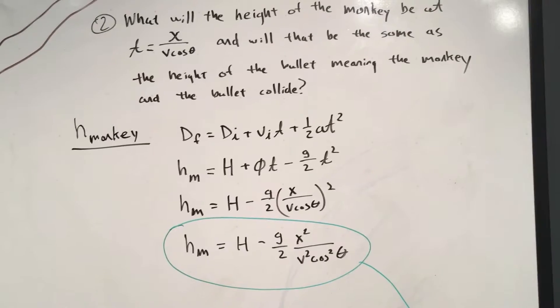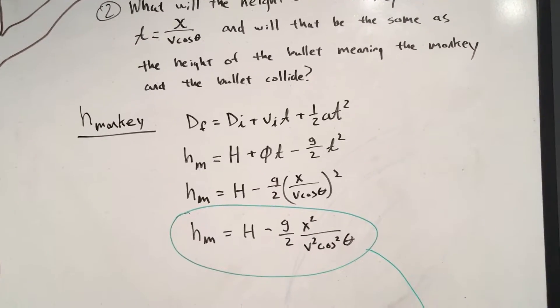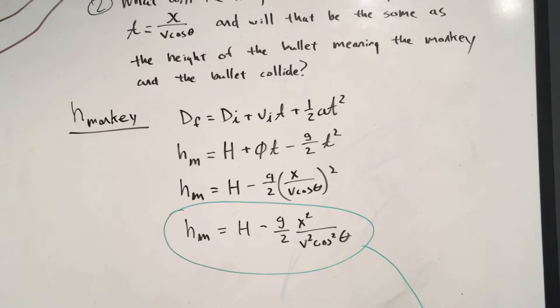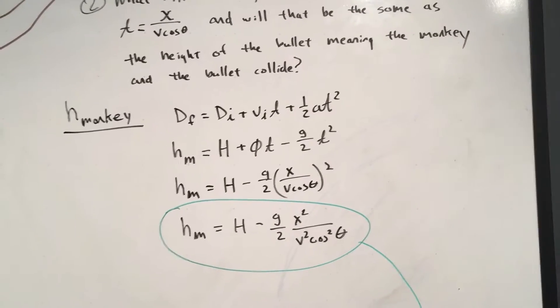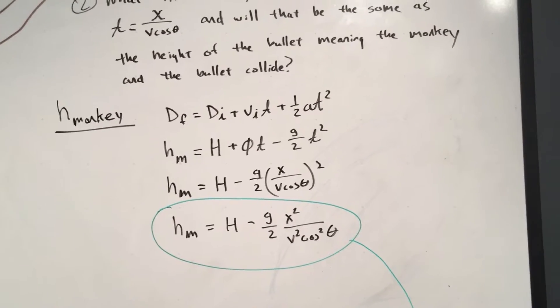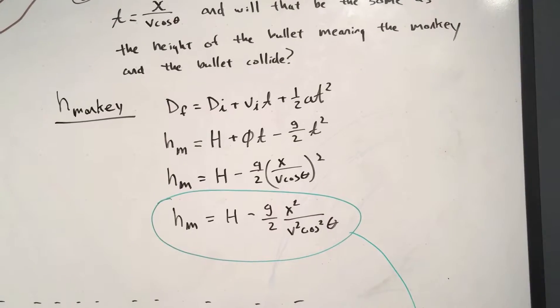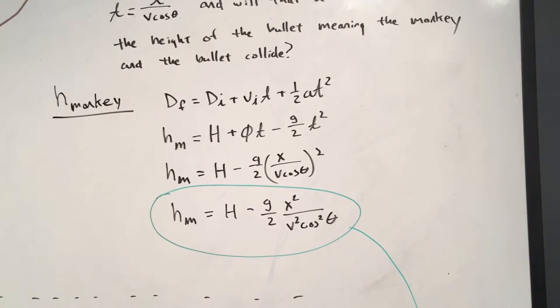So D final is the height of the monkey. His initial, since the barrel tip is zero, his initial height in the Y is H. He has no initial velocity, so it's zero. And he's going to accelerate at minus g.